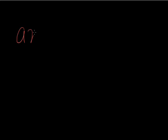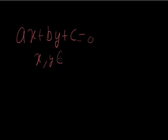Today we start with linear equations in two variables. First of all, what is a linear equation? A linear equation is an equation whose variable power is 1. Suppose we have the equation ax plus by plus c equal to 0. Here x and y are variables and a, b, c are constants. Here the power of x is 1 and the power of y is 1. That's why we call it a linear equation.